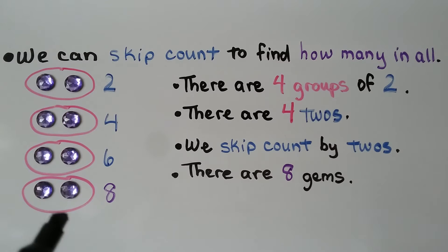We can skip count to find how many in all. Here we have four groups of two. They each have two. So we have four twos. And we skip count by twos. Two, four, six, eight. So there's eight gems.